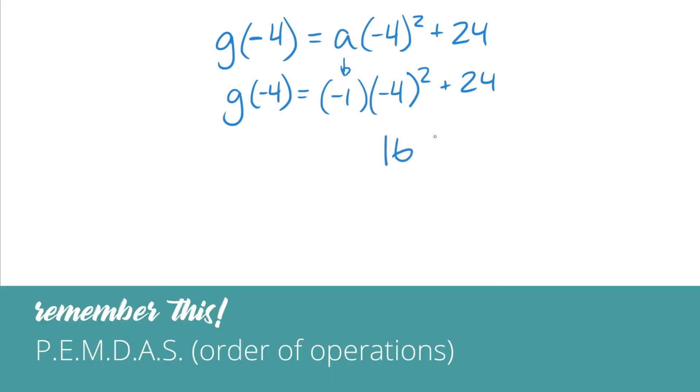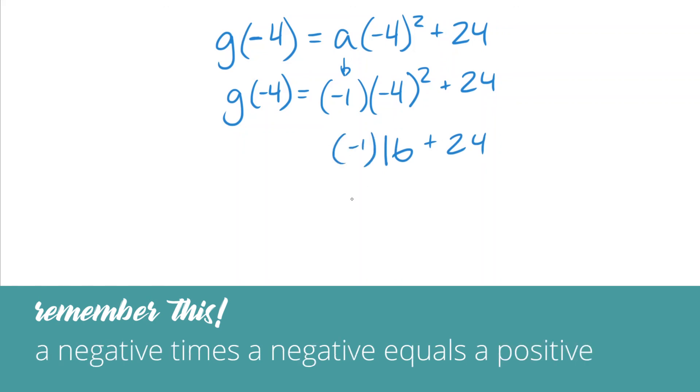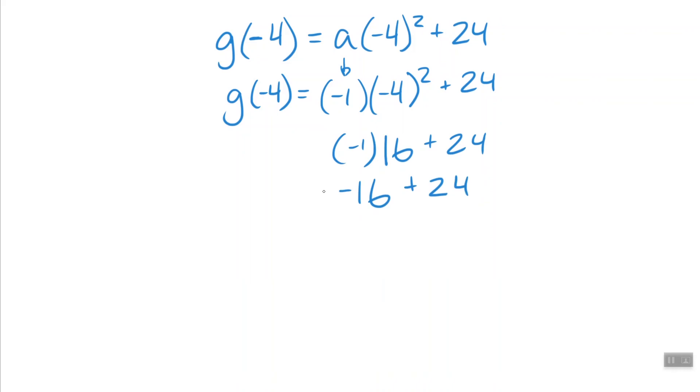Let's start off by squaring negative 4. That's going to give us 16. From there we're going to multiply the negative 1 to give us negative 16 plus 24. Now this looks a little confusing. So let's figure this out by putting 24 over negative 16 and combining them the old school way. From there we get 8. So g(-4) equals 8.